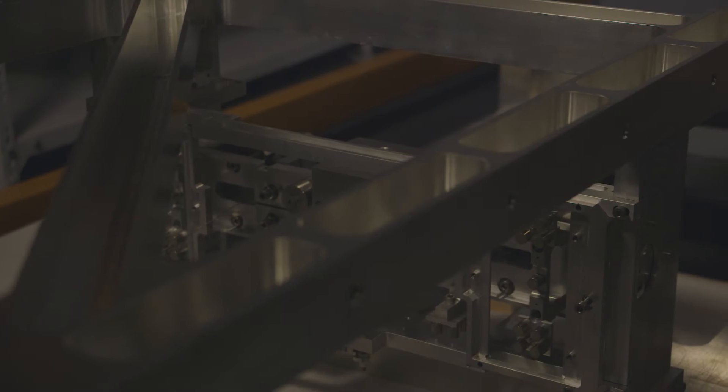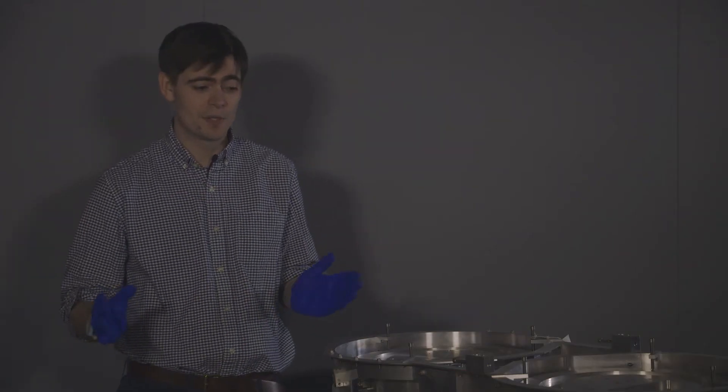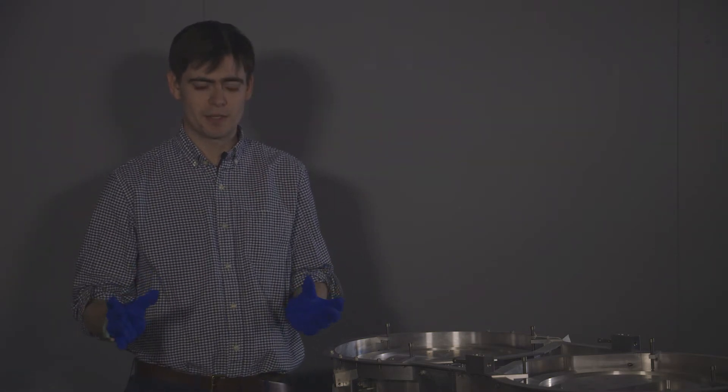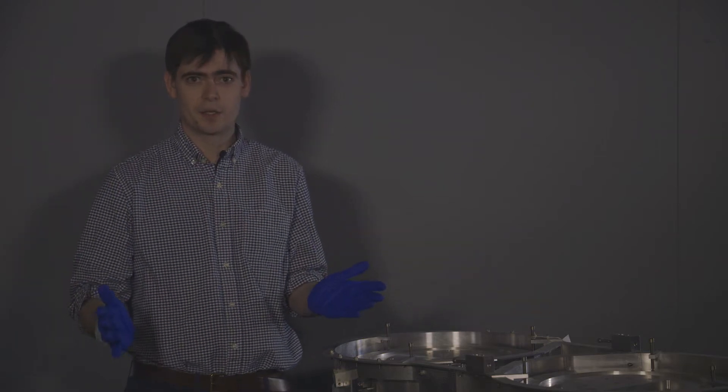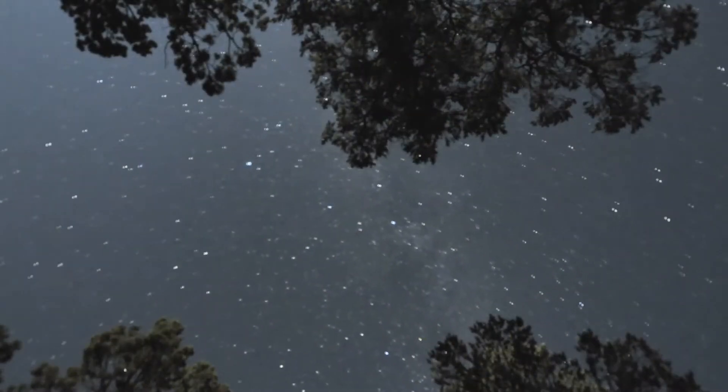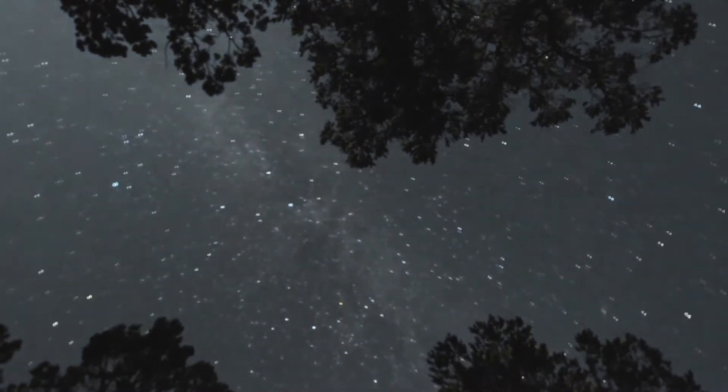Albert Einstein first predicted gravitational waves back in 1916 through pure mathematics, but he doubted we'd ever find them. A hundred years on, it took the world's most sensitive experiment ever constructed, which this object was developed for, to finally detect the first gravitational wave from Earth.